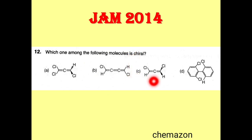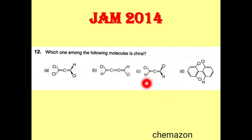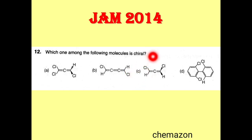So the second molecule is again achiral. In the third option, on one particular side there are different groups on either side of the allene molecule, and there are an even number of double bonds. So this is a chiral molecule and this is the correct answer.